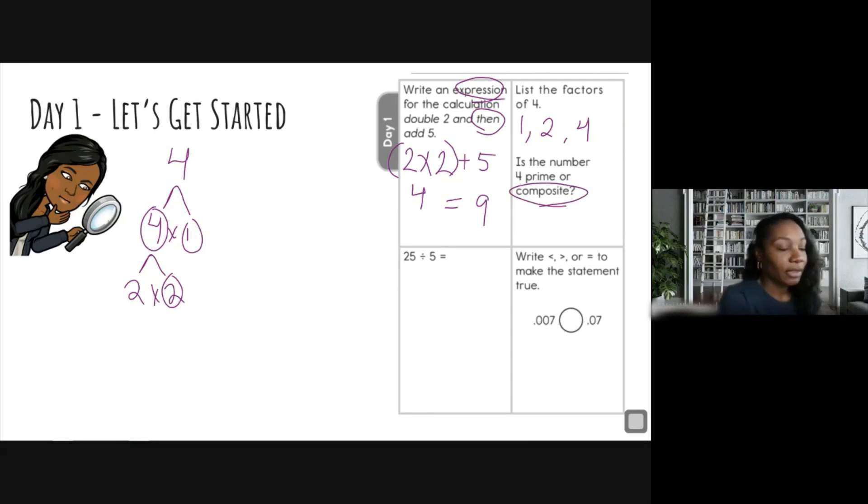So number four is actually a composite number because it is actually divisible by two or more numbers. Okay, and that's what makes it a composite number. All right, let's move on.